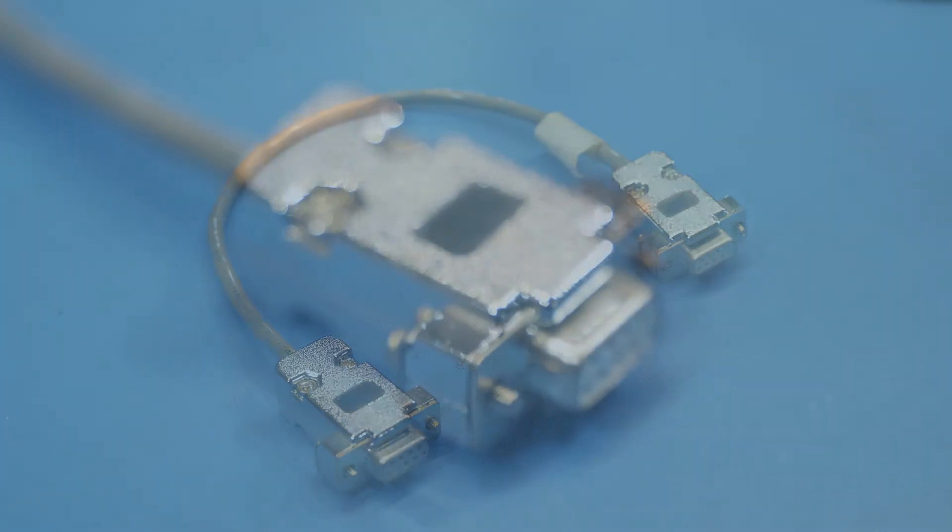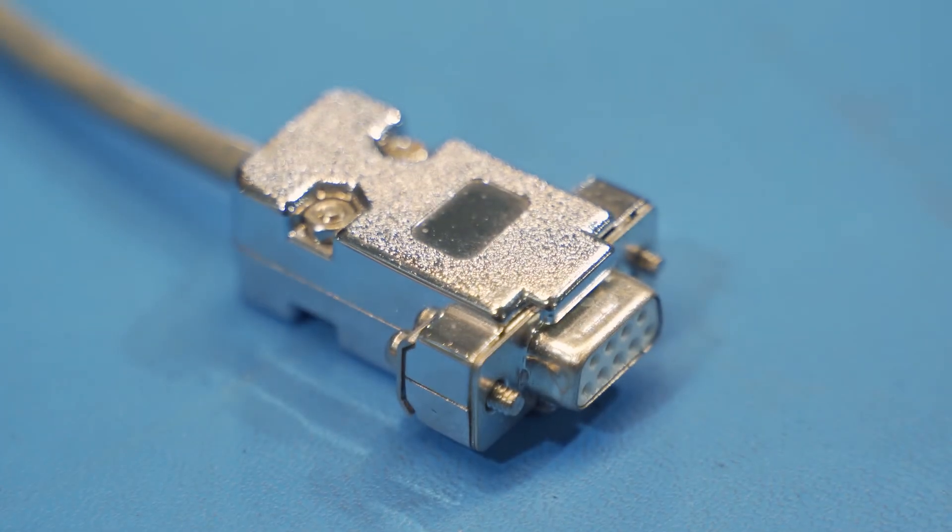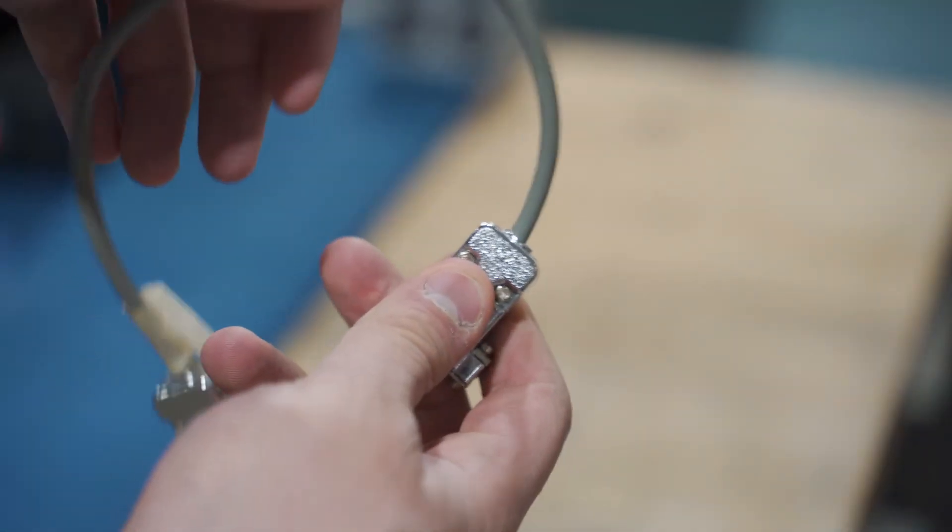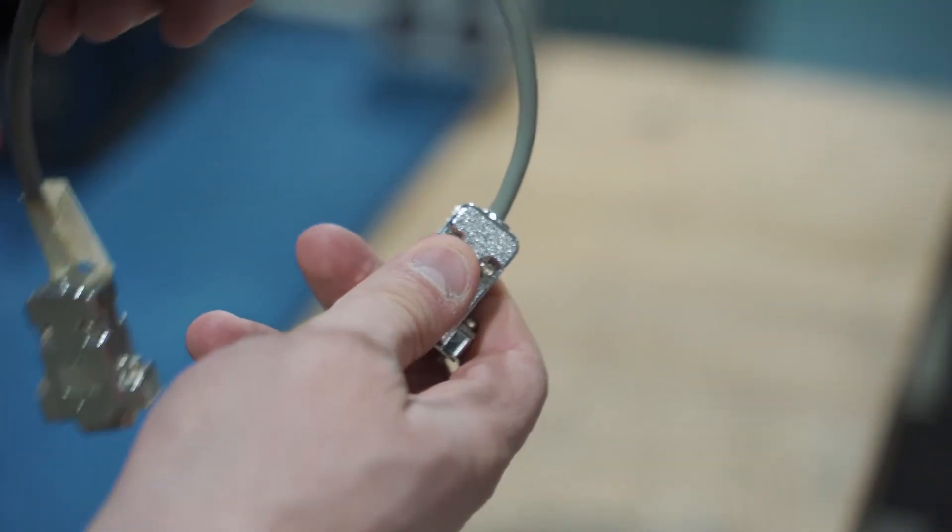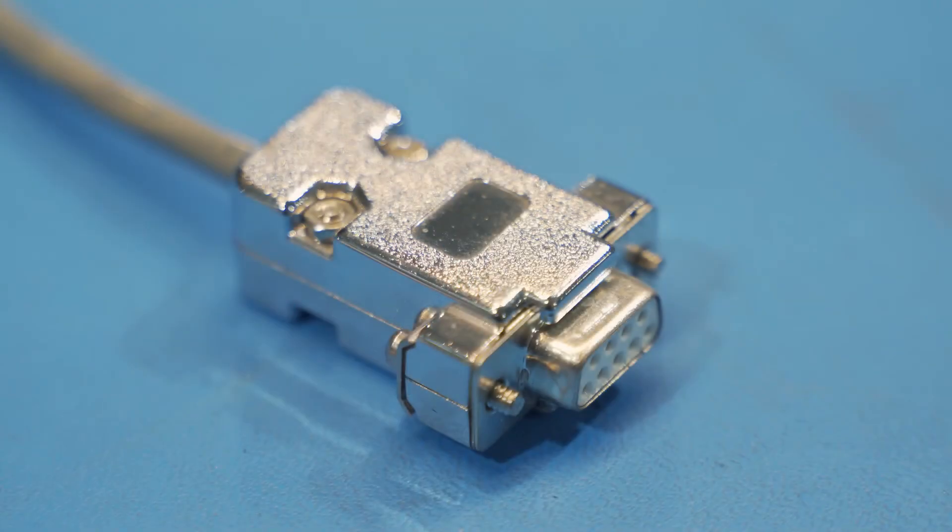Other strain relief techniques include back shells. These commercial, off-the-shelf parts slide onto the cable and are tightened onto the connector. They're great for low volume production, but can cost from $1 each to as much as $50 each for military grade parts.